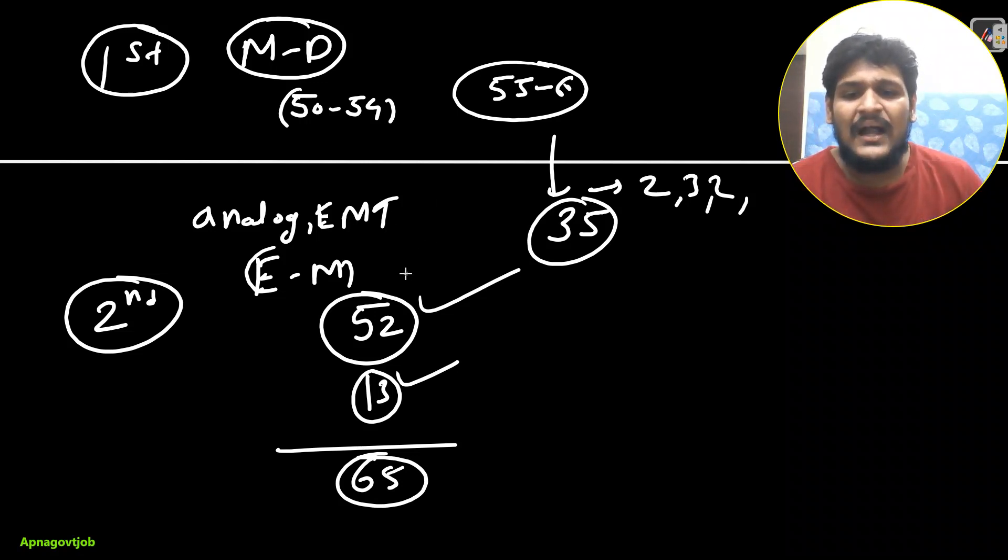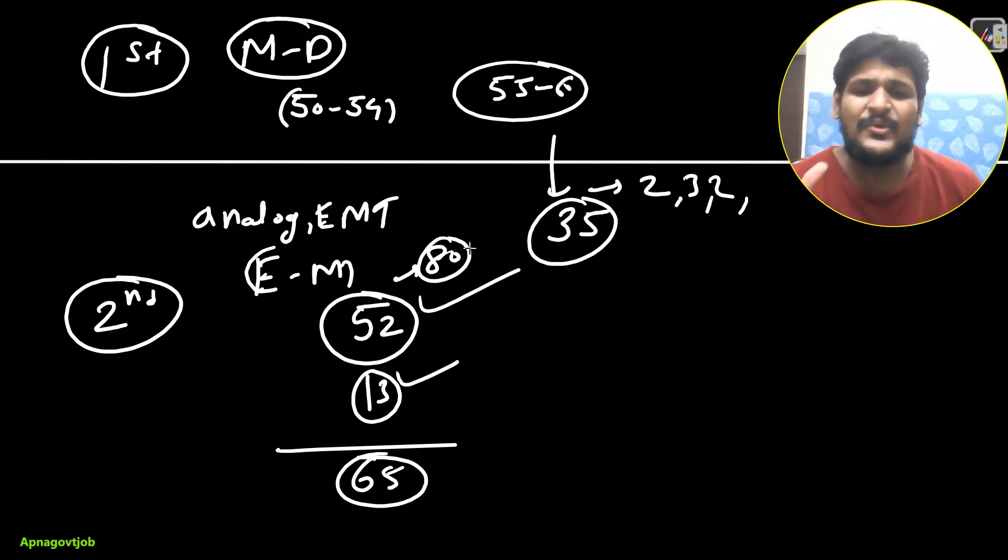This is the most important thing if you want to correct BARC OCES exam 122. So those who already follow this, definitely they score good. Because see, ideally it will take 80 minutes maximum to attempt this 52 questions with good accuracy, that is 95% to 98%. And rest of the 40 minutes, you can attempt all the required questions. So overall, second shift paper, it's easy to moderate.